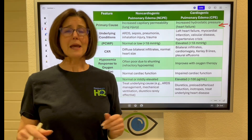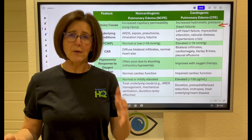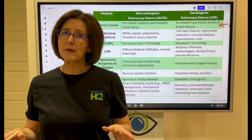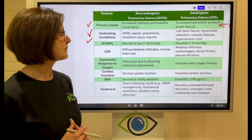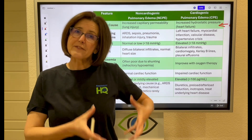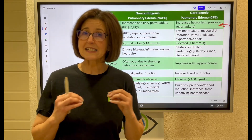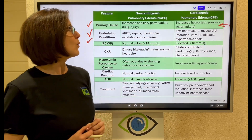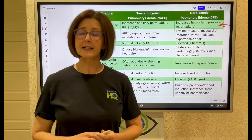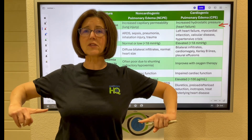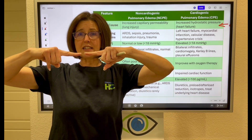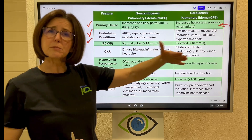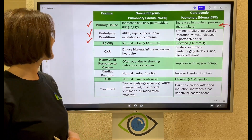On chest X-ray, both types can be described as a butterfly or batwing pattern — that's what you're looking for on testing. However, with cardiogenic pulmonary edema specifically, we'll also see cardiomegaly, typically left ventricular hypertrophy. Very specific to cardiogenic are Kerley B lines — horizontal lines within the lung field showing fluid that has gotten into some fissures. Cardiogenic pulmonary edema may also have pleural effusions associated with it.